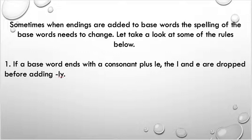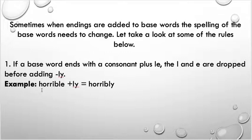The first rule when adding the suffix '-ly' onto a base word is: if the base word ends with a consonant plus '-le,' the 'l' and the 'e' are dropped before adding the '-ly.' For example, the word 'horrible' ends with a consonant 'b' followed by 'l' and 'e.' So I need to take off the 'l' and the 'e' and add '-ly.' The new word is 'horribly.'